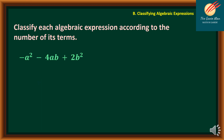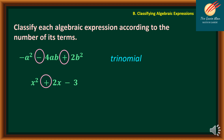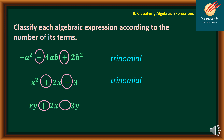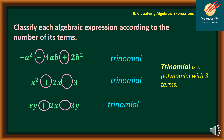If we have negative a squared minus 4ab plus 2b squared, the minus and plus signs separate the expression into three terms — so we call this a trinomial. Another example: x squared plus 2x minus 3 is also separated into three terms by plus and subtraction symbols, making it a trinomial. Similarly, xy plus 2x minus 3y is a trinomial. A trinomial is a polynomial with three terms.